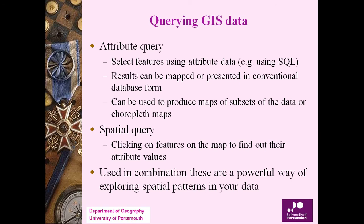Now, querying GIS data: attribute queries select features using attribute data via structured query language (SQL). Results can be mapped or presented in conventional database form, and can be used to produce maps of subsets of the data or choropleth maps. Spatial queries involve clicking on features on the map to find their attribute values — a pop-up will appear with all the information. Together, attribute and spatial queries are a powerful way of exploring spatial patterns in data.